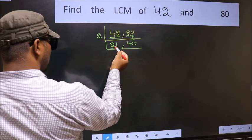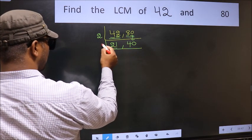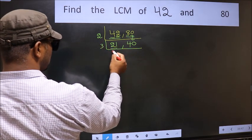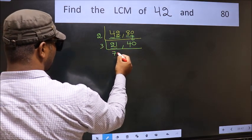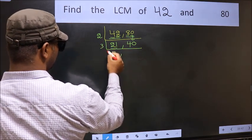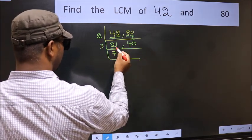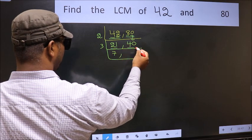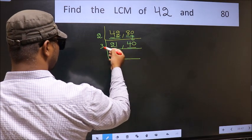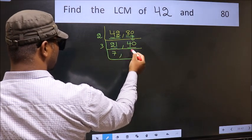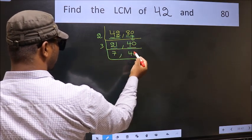Now here we have 21. 21 is 3 sevens — 3 times 7 is 21. The other number 40 is not divisible by 3, so we write it down as it is.